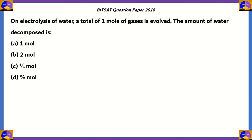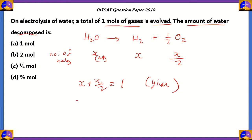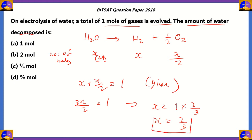Next question: in electrolysis of water, a total of one mole of gas is evolved. Find the amount of water decomposed. From the equation, 1 mole of water gives 1 mole H₂ plus ½ mole O₂. Let x be moles of water; then moles of H₂ = x and moles of O₂ = x/2. Since x + x/2 = 1, we get 3x/2 = 1, so x = 2/3. The amount of water decomposed is 2/3 moles, option D.